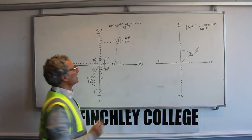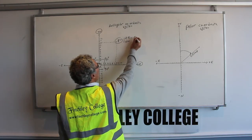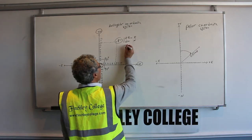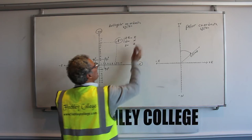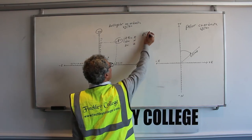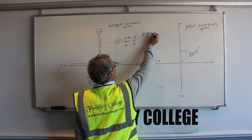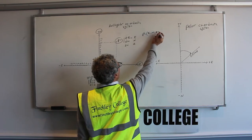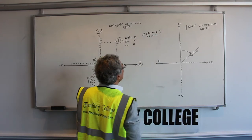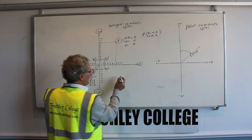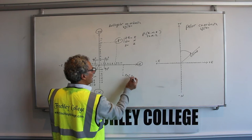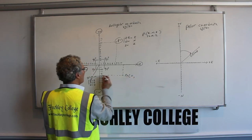The easting and northing — we usually write the easting first, then the northing, and then the height. For example, you could write P1 as easting 7.5, northing 10, and height Z equals 2. If you have a point P2 here, the easting is 11 and the northing is minus 5.